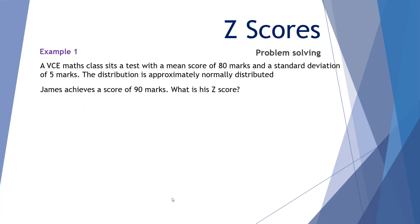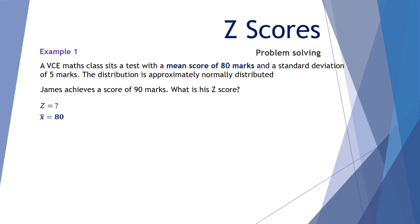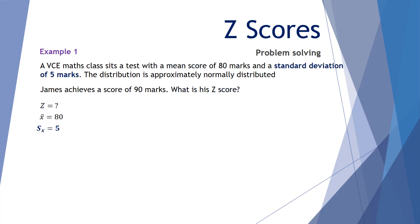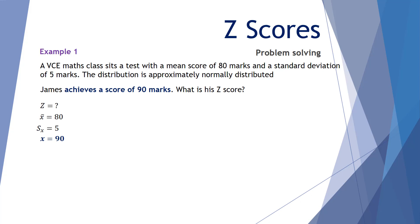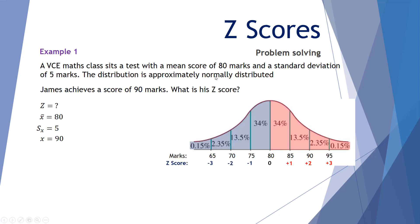Example number one. A VCE maths class sits a test with a mean score of 80 marks and a standard deviation of 5 marks. The distribution is approximately normally distributed. James achieves a score of 90 marks — what is his z-score? The mean score is 80, the standard deviation is 5, and James' individual score is 90. The words 'normally distributed' mean we can use our normal distribution curve to solve this problem.